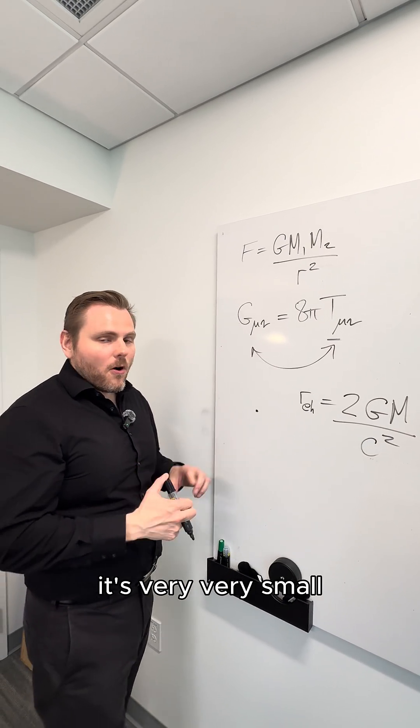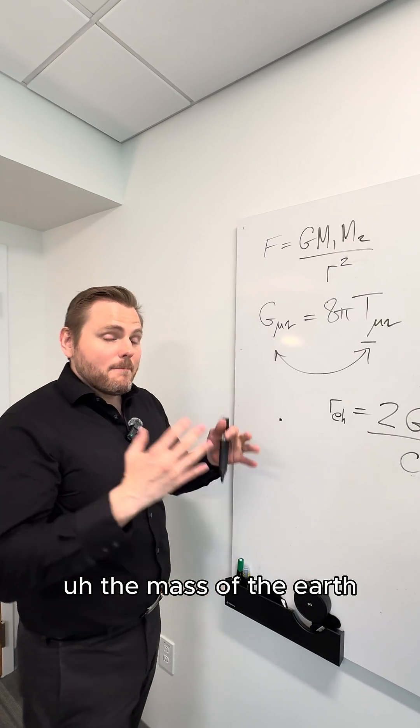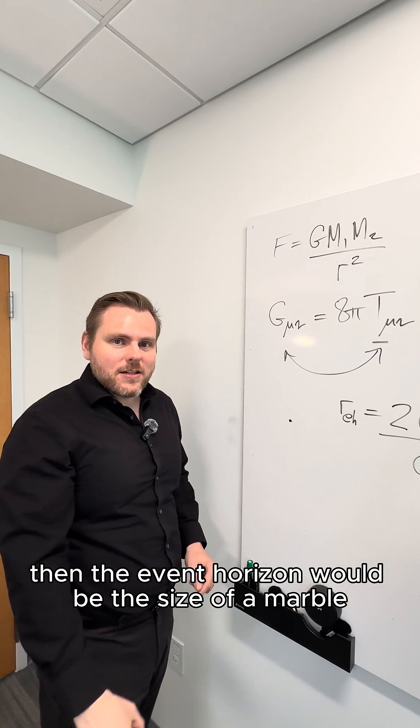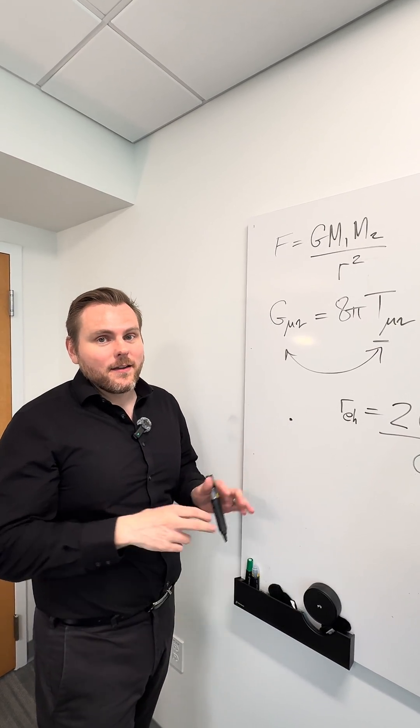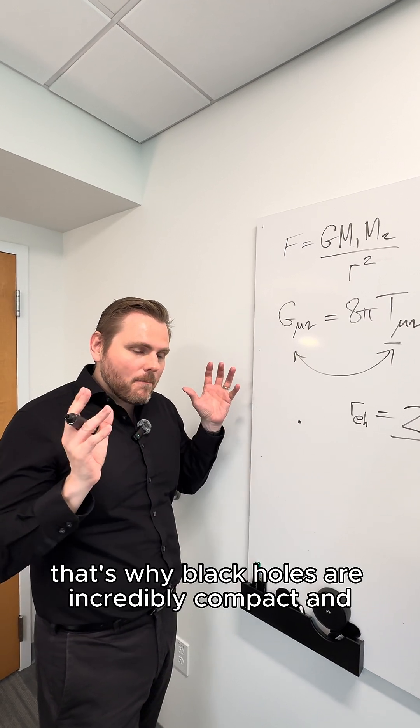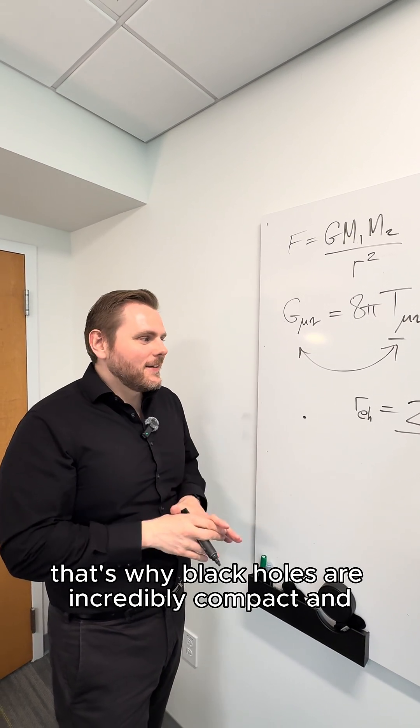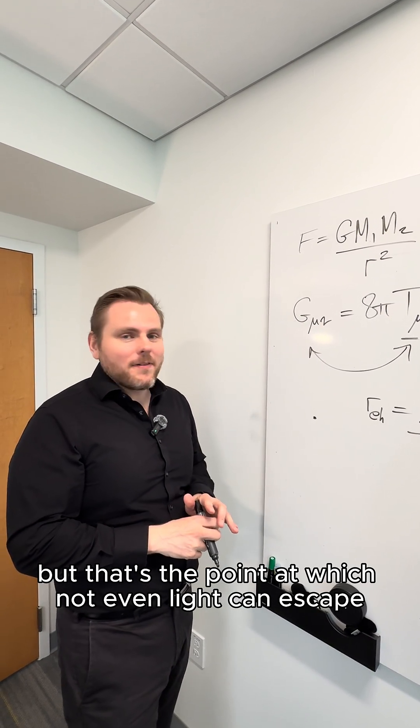It's very, very small. If you had a black hole the size of the earth, the mass of the earth, then the event horizon would be the size of a marble. So very, very small. That's why black holes are incredibly compact. But that's the point at which not even light can escape.